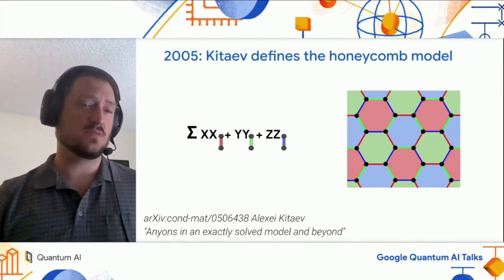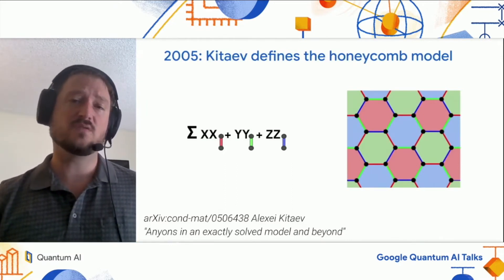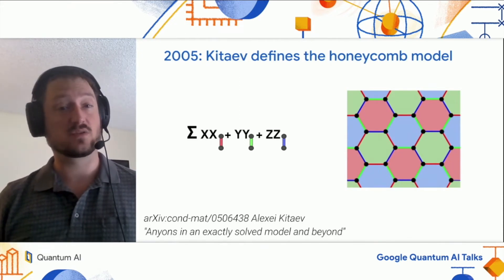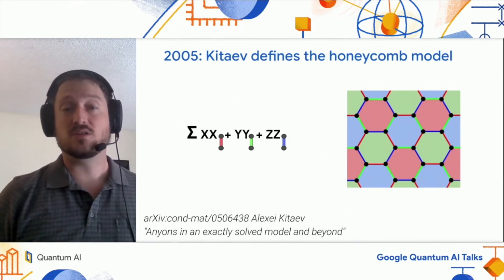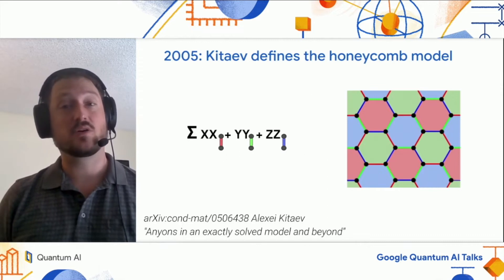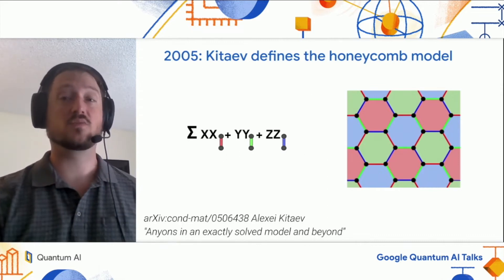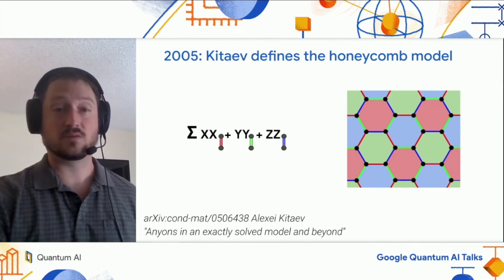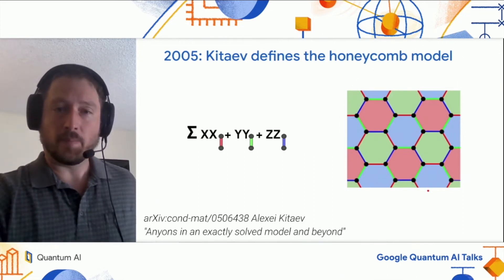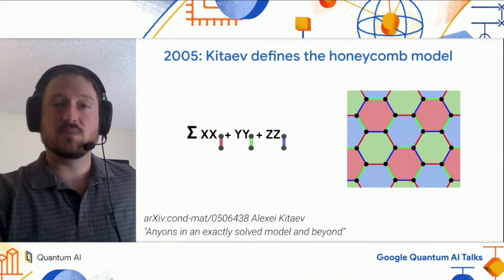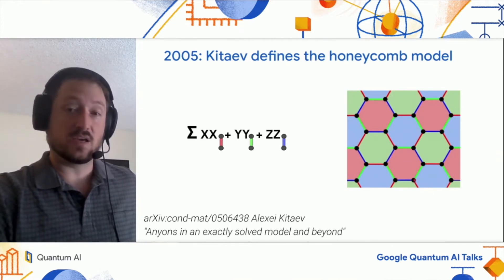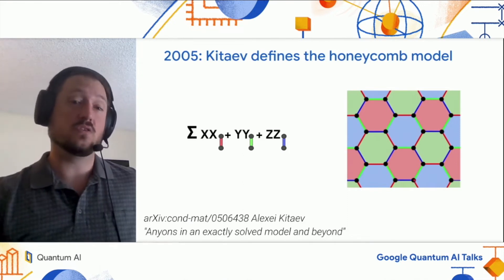The Honeycomb code is relatively recent, but it's rooted in a physical model that Kitaev came up with over a decade and a half ago. This model is based on a hexagonal lattice with periodic boundary conditions, where the left wraps around to the right and the top wraps around to the bottom, like in Pac-Man. In this picture on the right, each of the black dots is a qubit,